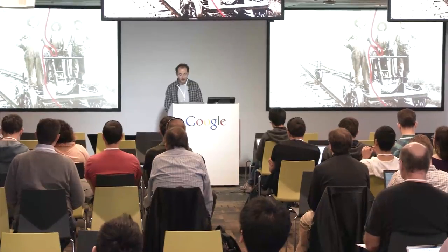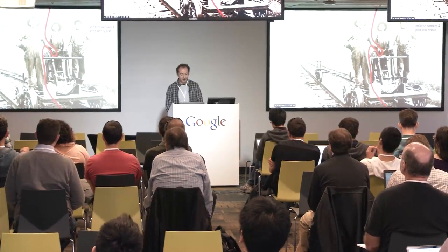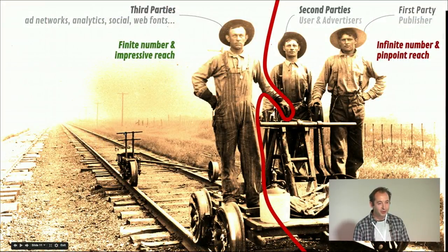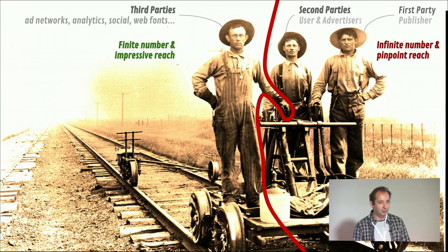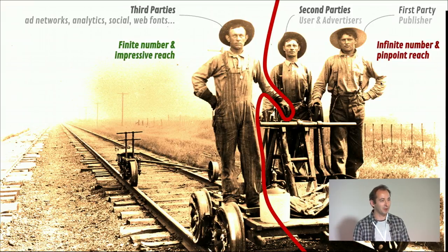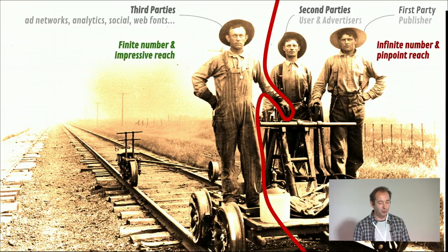What I've been focusing on is mostly the third-party side of the system, because there are only a finite number of third parties. If you can work with them, understand their needs, and help them improve their performance, you can have impressive reach and fix a lot of issues on the web. Whereas if you focus only on first parties, there are so many of them that it's very hard to scale. The same goes for advertisers — helping them make better ads might fix a couple of ads for a quarter, but then a new set of ads would just come up.